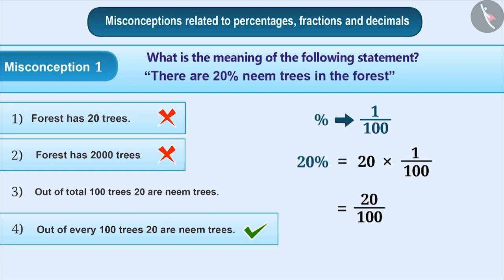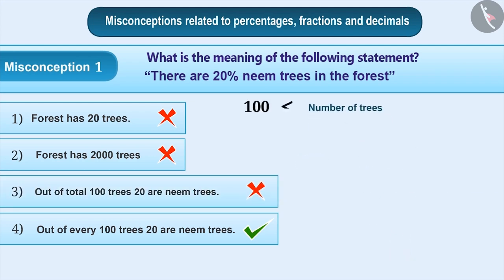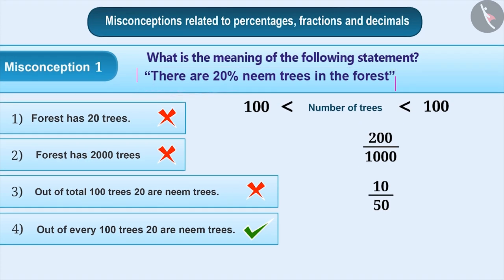Sometimes, students find the fraction form of 20%, that is 20 by 100, but fail to understand its correct meaning. They think that in the forest there are 100 trees, out of which 20 are neem trees. But this is incorrect. Therefore, option 3 is incorrect. The number of trees can be more or less than 100. Neem trees can be 200 out of 1000, or 10 out of 50. In both situations, we say there are 20% neem trees in the forest, because 200 by 1000 equals 10 by 50 equals 20 by 100 equals 20%.